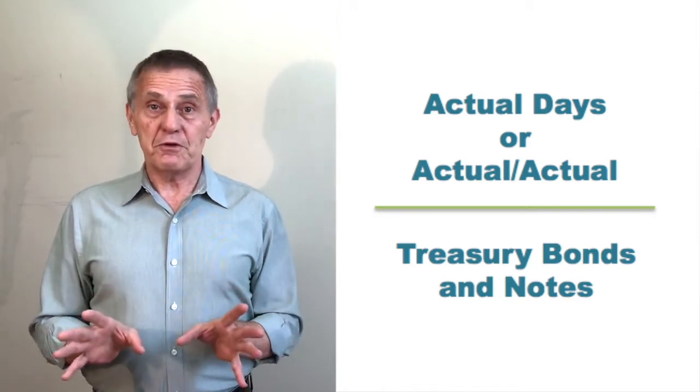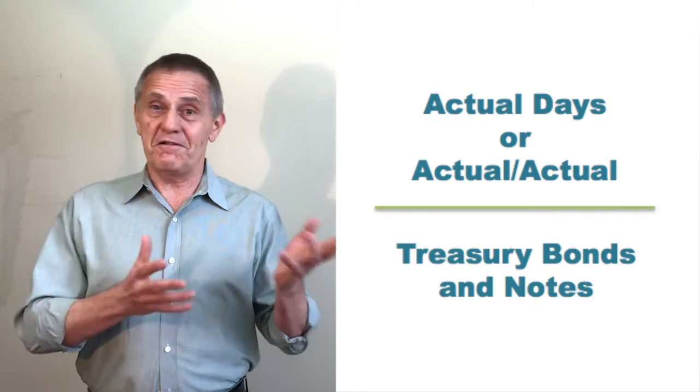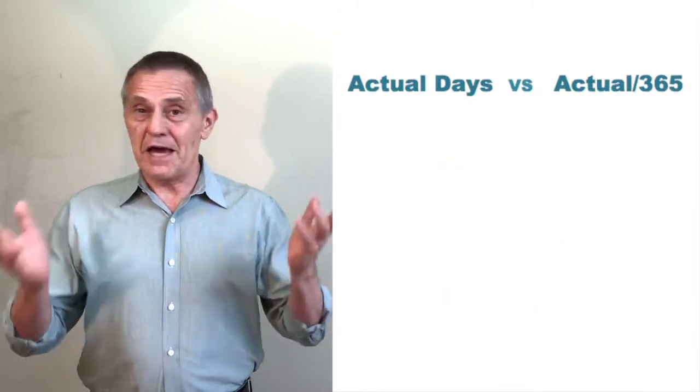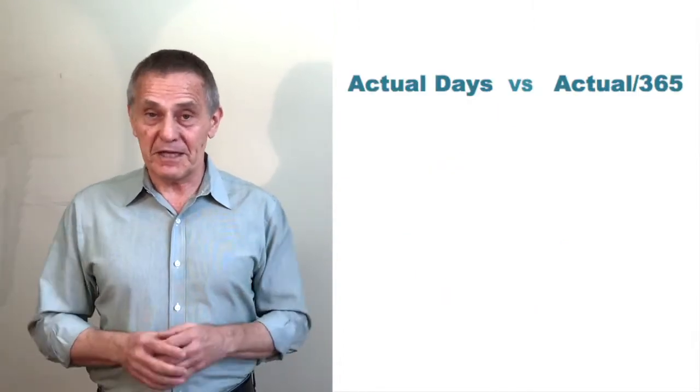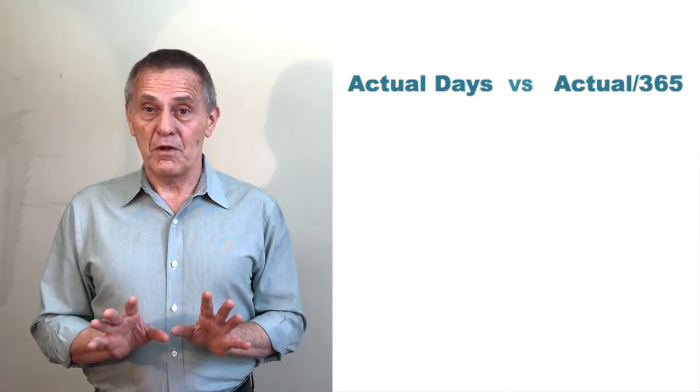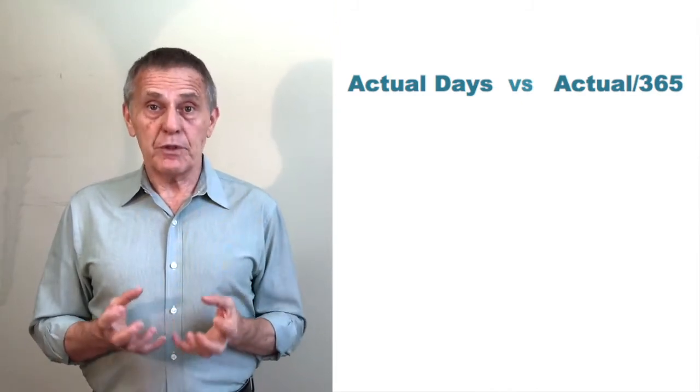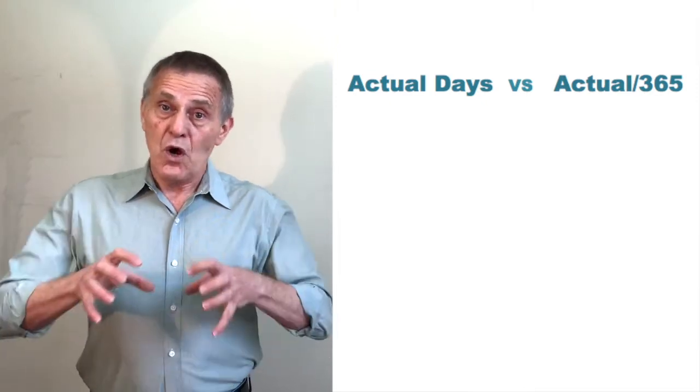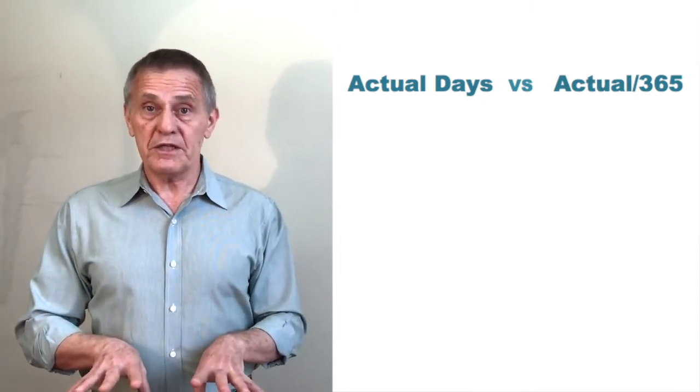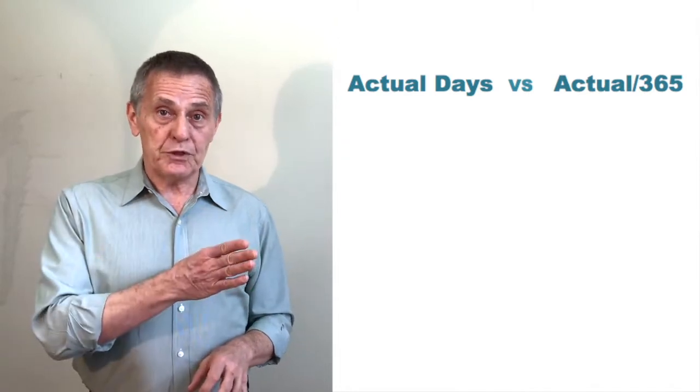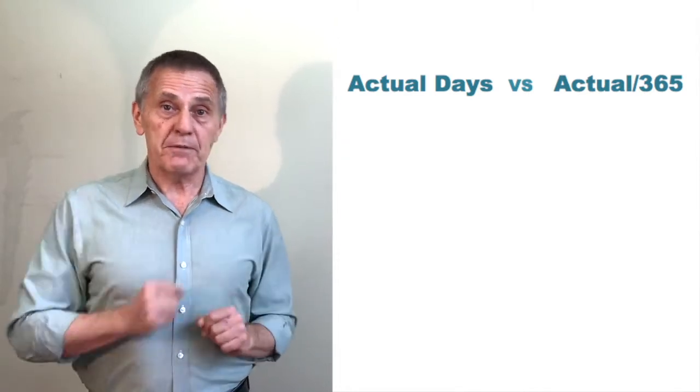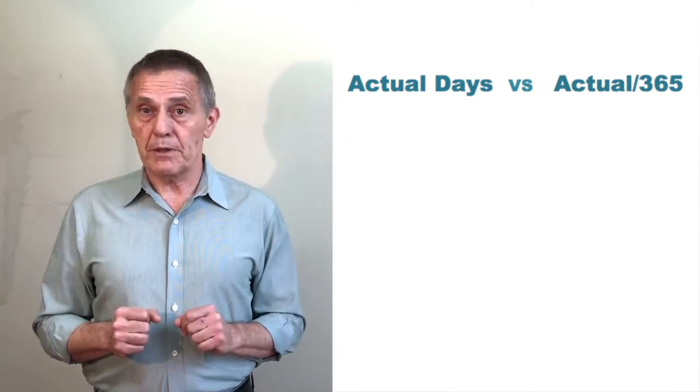Now, I suspect some of the viewers are thinking, what's the diff? Actual days, actual over 365, it's the same thing. No, it isn't. First off, as we'll see in one of the subsequent videos, mechanically, when you compute the accrued interest on a treasury security, what's in the formula for computing the accrued interest is the actual number of days of accrued interest divided by the actual number of days in the coupon period.